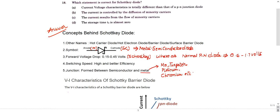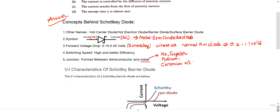Let me introduce what the Schottky diode is: its symbol, its voltage drop, and other key concepts. The other names of the Schottky diode are hot carrier diode, hot electron diode, barrier diode, and surface barrier diode. Don't confuse these in the exam — they are all the same device.